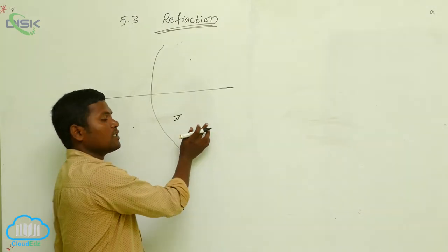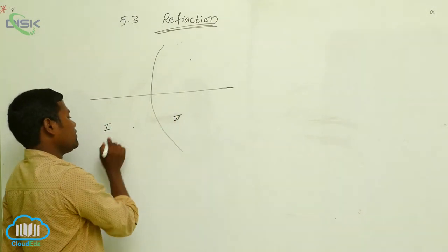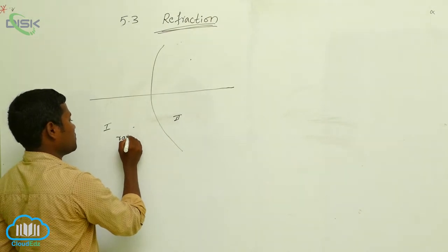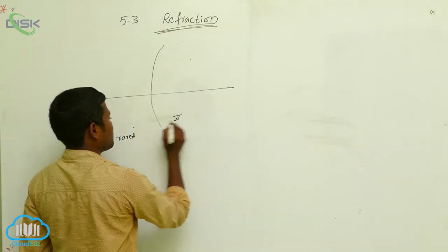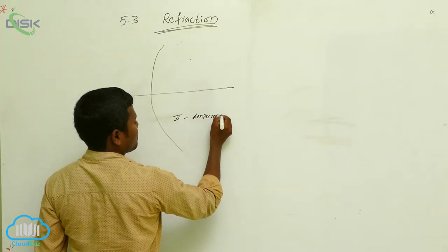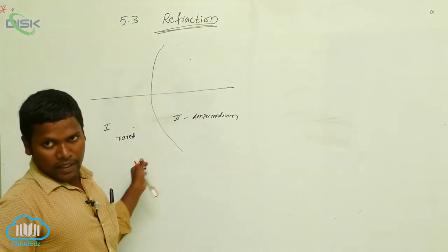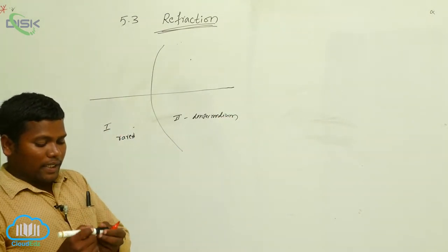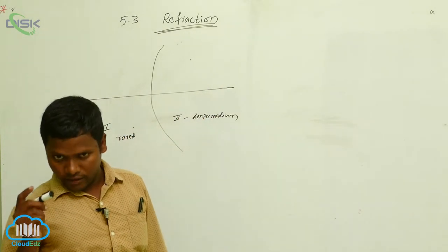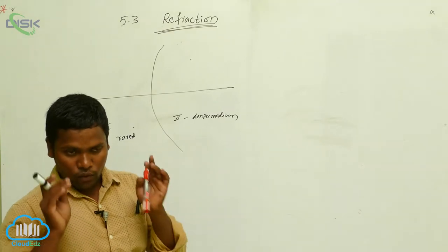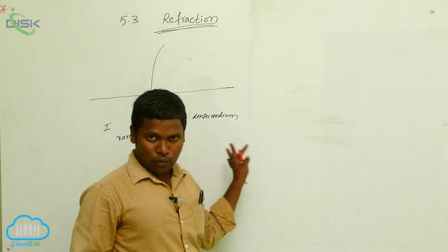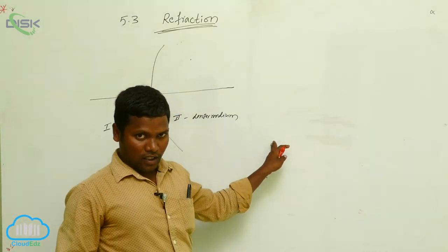This is the first medium and this is the second medium. So the first medium we can say rarer medium and the second is denser medium. Light may go from one side to another side. If refraction wants to take place, definitely two mediums should be there — then only the refraction pattern happens. So here, how many mediums are there? Two mediums. One is the first medium, another one is the second medium.